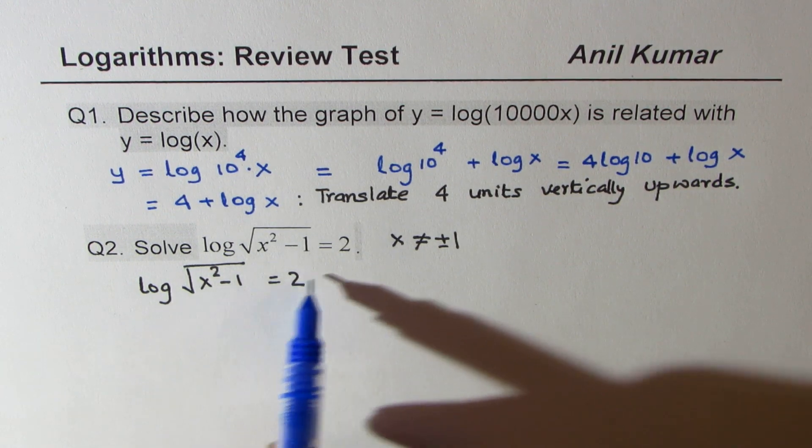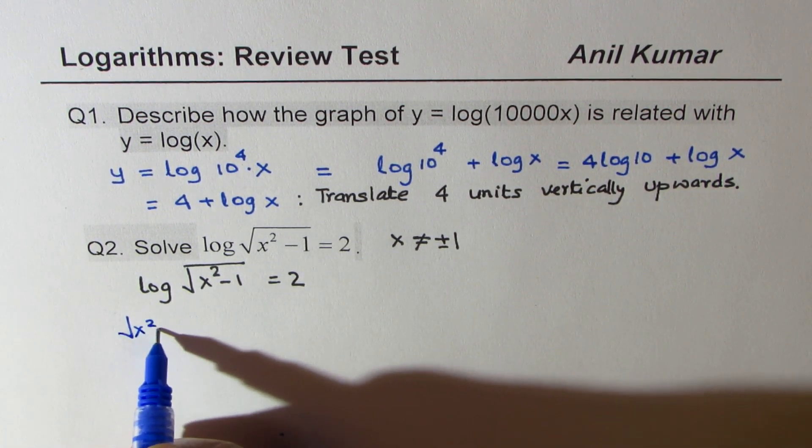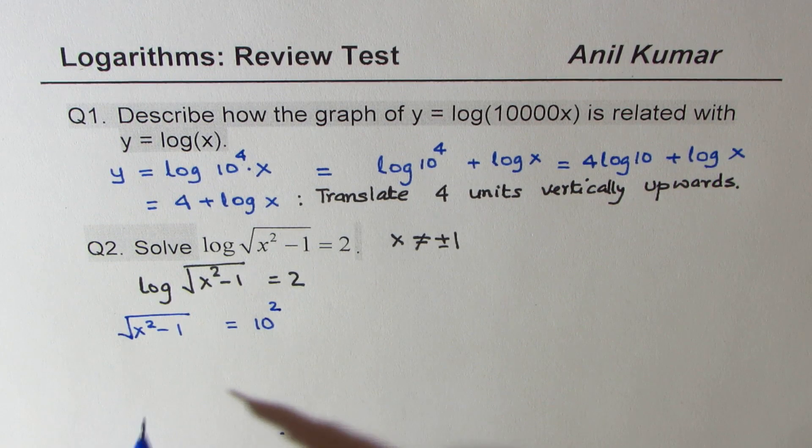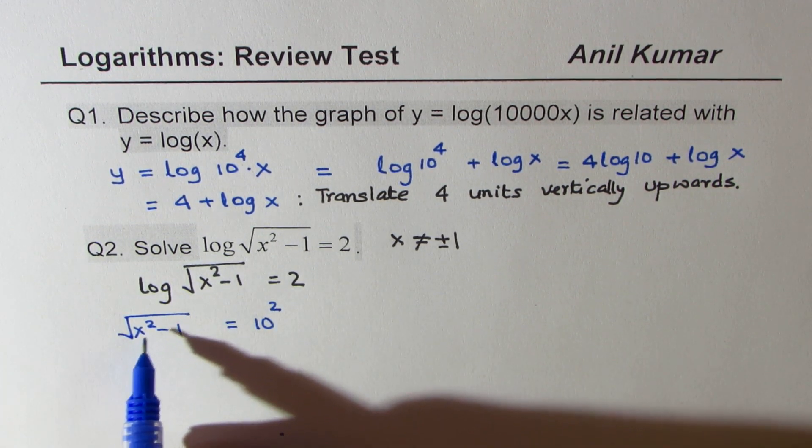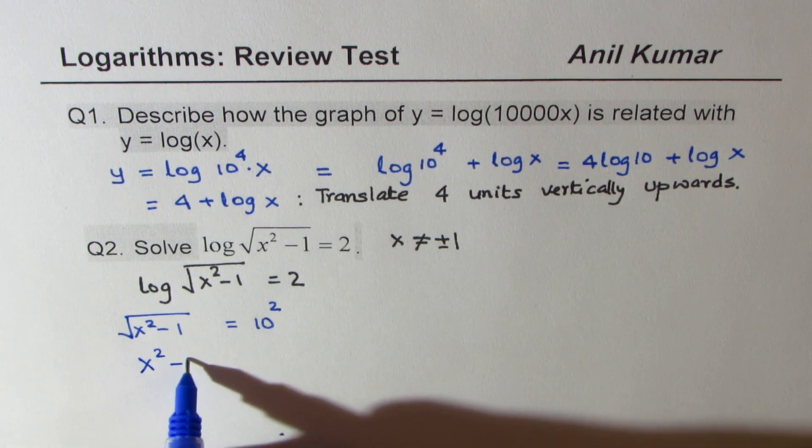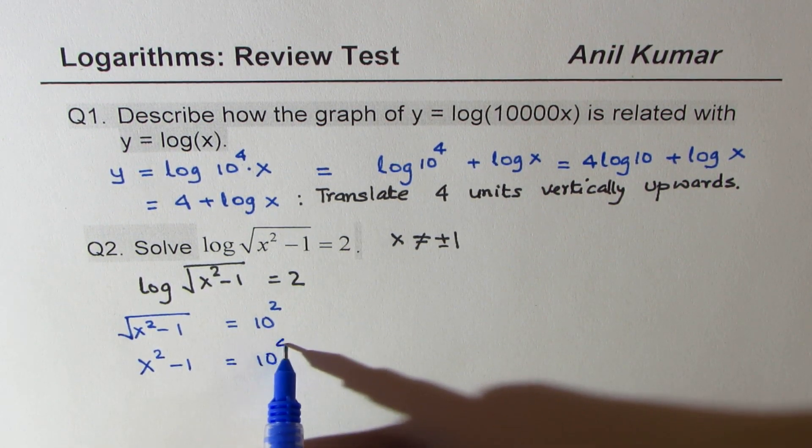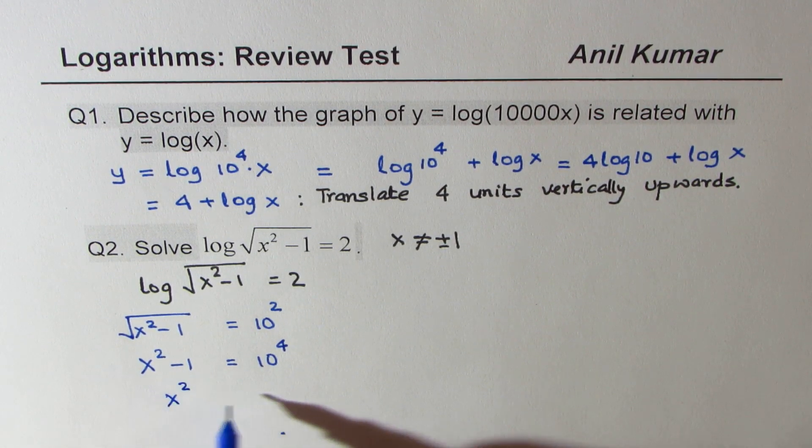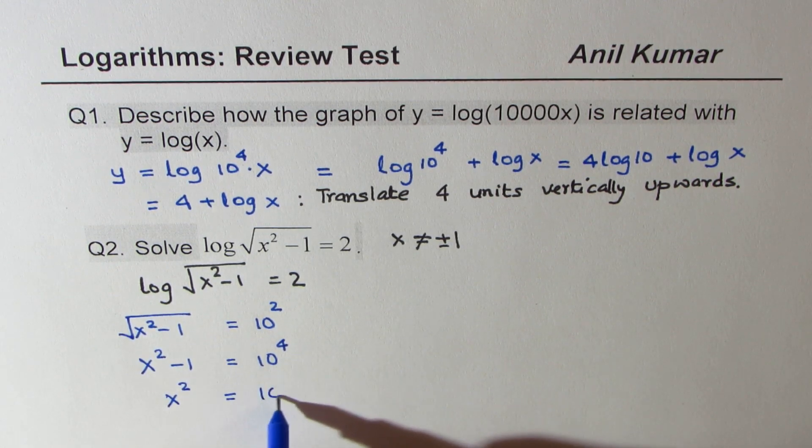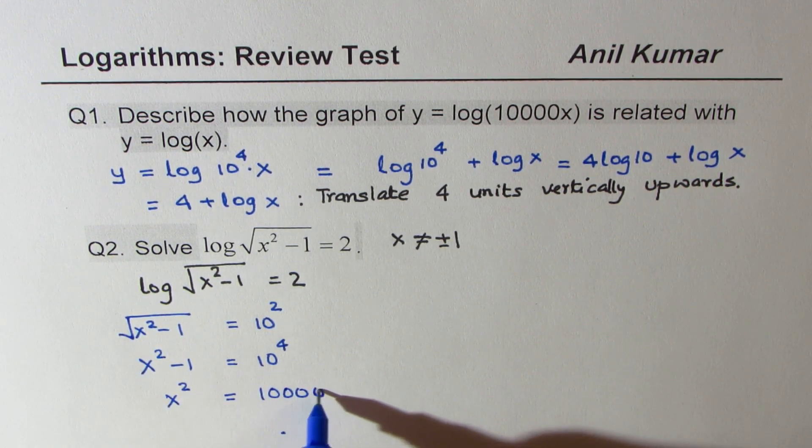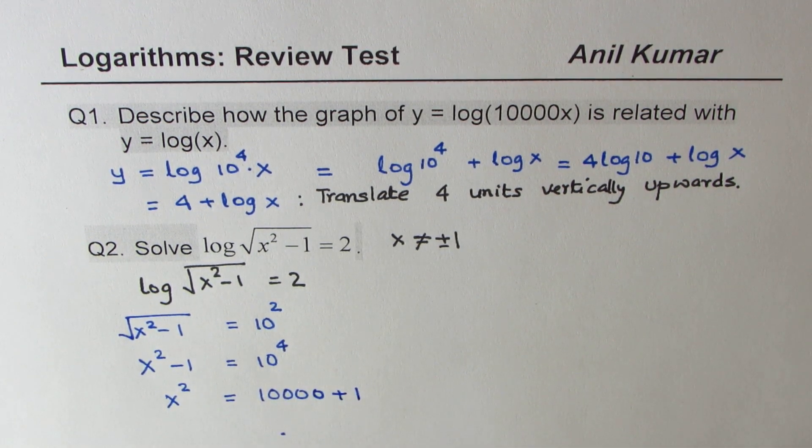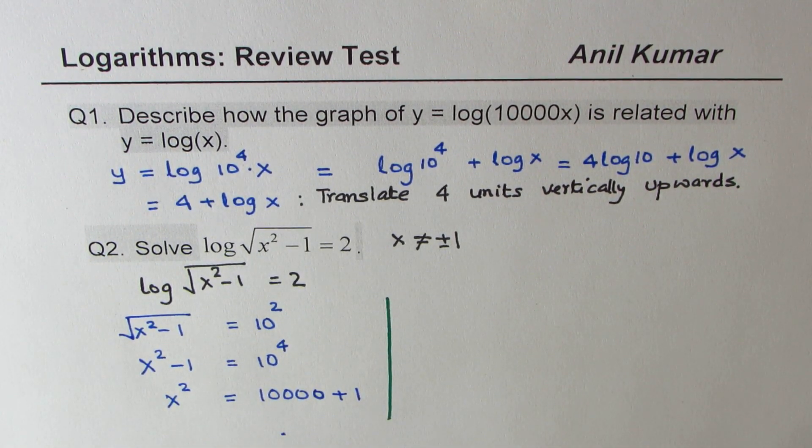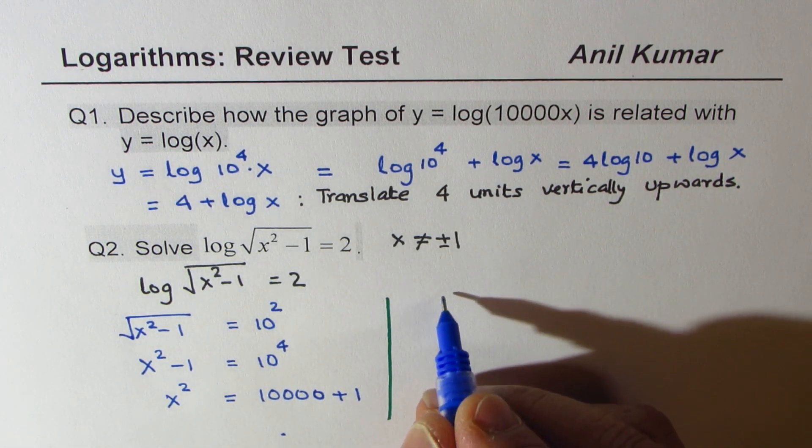We can write this in exponential form, so we get square root of x squared minus 1 equals 10 to the power of 2. Now you can square both sides, so we get x squared minus 1 equals 10 to the power of 4, which is four zeros. And then I'm adding 1, so we get 10,001.